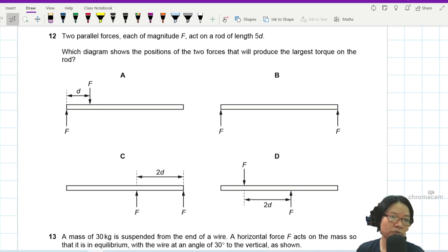Question 12. Two parallel forces, each of magnitude F, act on a rod of length 2d. Which diagram shows the position of the two forces that will produce the largest torque on the rod?